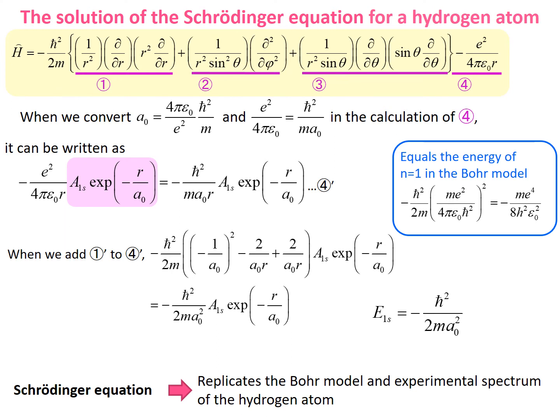Now let us move on to the fourth operator. As we have seen in the definition of this problem, a0 equals 4 pi epsilon 0 upon e squared, times h bar squared upon m. Here, we are going to convert it as e squared upon 4 pi epsilon 0 equals h bar squared upon m a0. Then, the applied result can be written like this. We call this equation 4 dash.